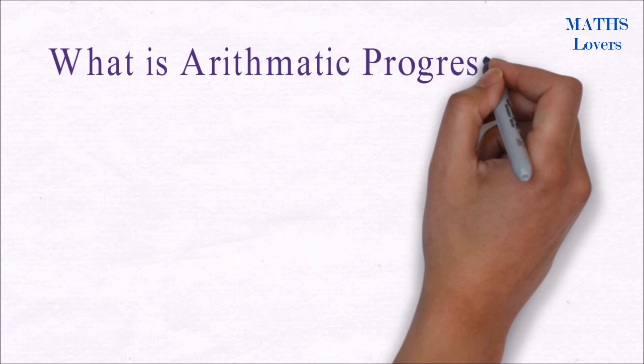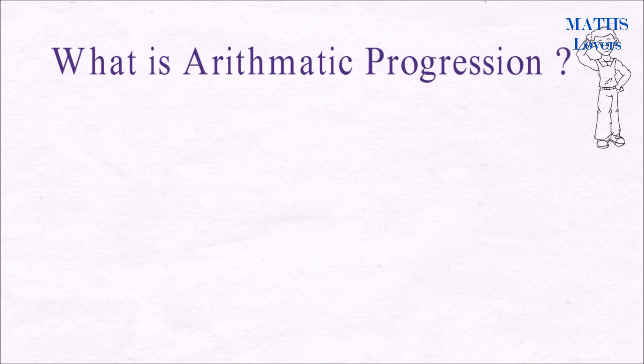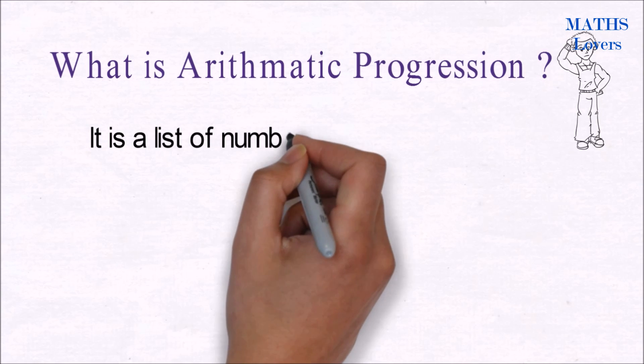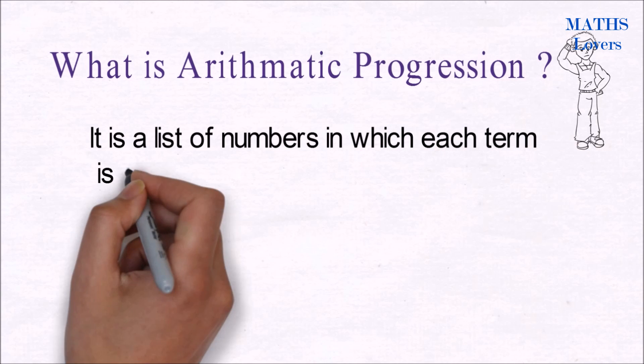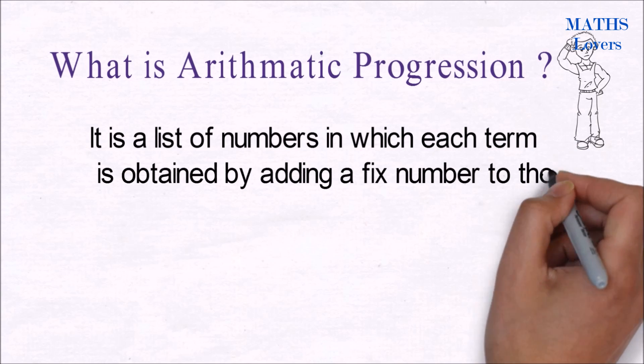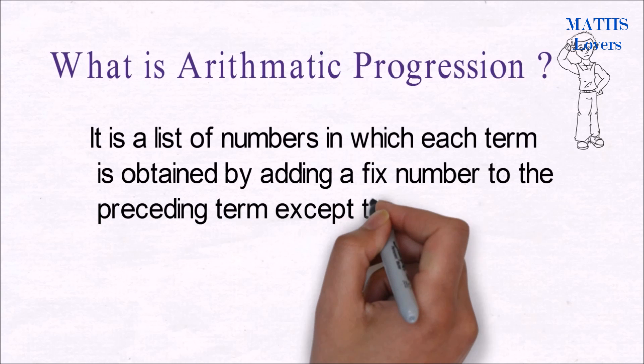In this video we will understand arithmetic progression. What is arithmetic progression? It is a list of numbers in which each term is obtained by adding a fixed number to the preceding term except the first term.